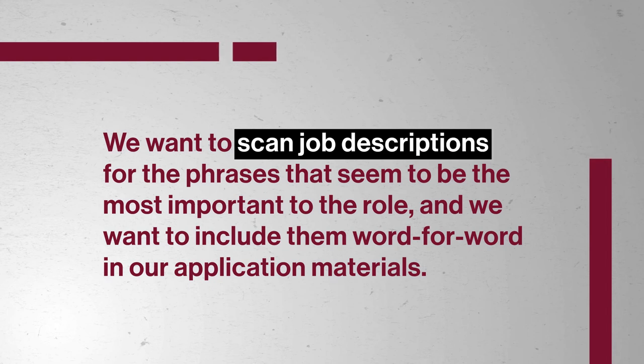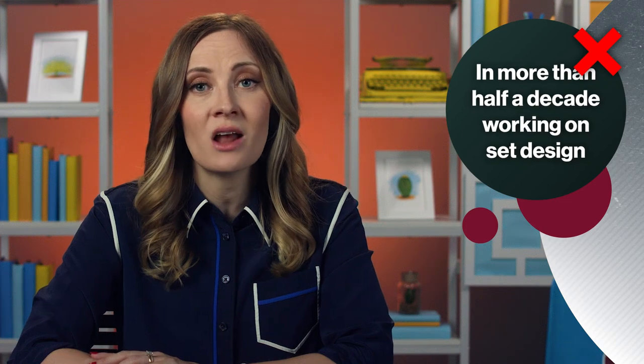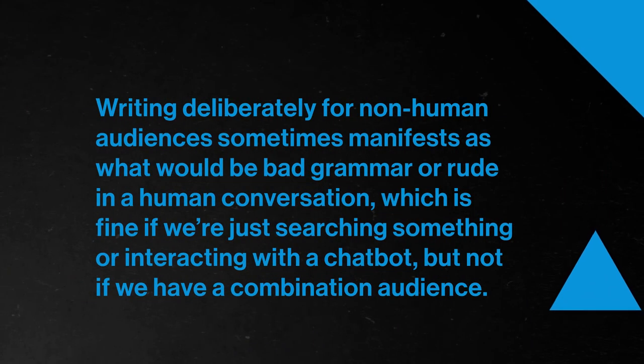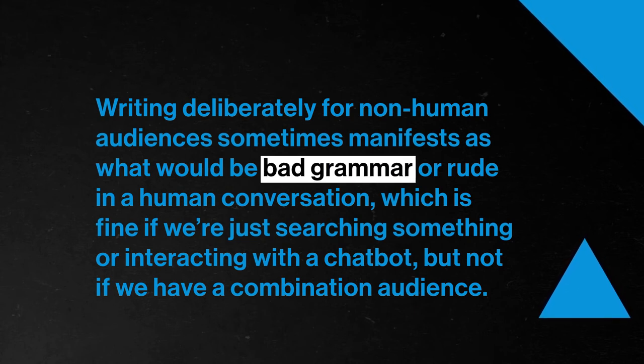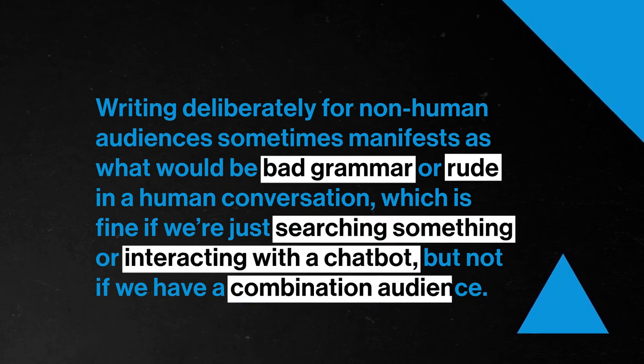We also use signposts like keywords when applying for jobs. We want to scan job descriptions for the phrases that seem most important to the role and include them word for word in our application materials. "Six years of experience" written out might trigger the system to credit our application for meeting that requirement, while "more than half a decade working on set design" might not be enough of a signpost for the non-human audience to catch it. The trick is figuring out how to write for both human and non-human audiences — writing deliberately for non-human audiences can sometimes feel like bad grammar or rudeness in a human conversation, which is fine when just searching or interacting with a chatbot, but not when we have a combination audience.